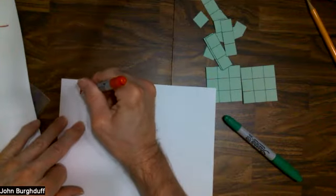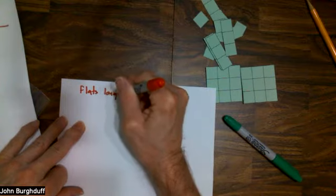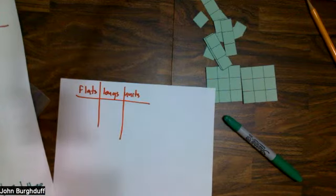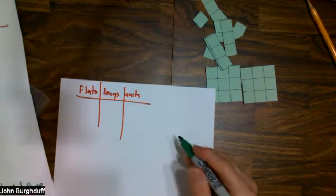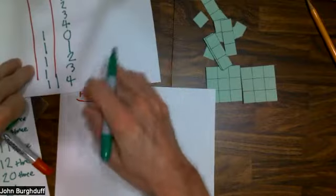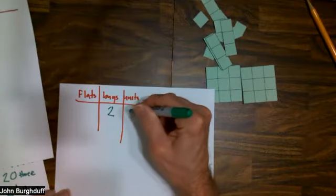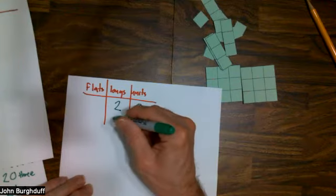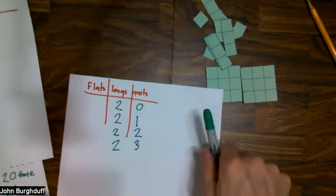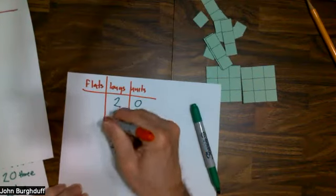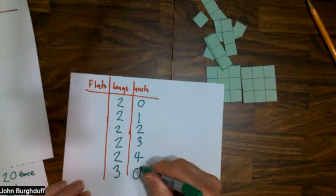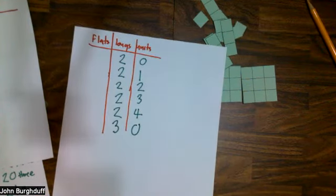Again, think flats, longs, units. We left off at one, four. The next one would not be one, five, because when we add one more unit to one, four, we would then have five units that should go together to create a long. So you have two longs and no units. Two, one, two, two, two, three. Two, four, and not two, five, but three, zero. So that's how you would count in base five.